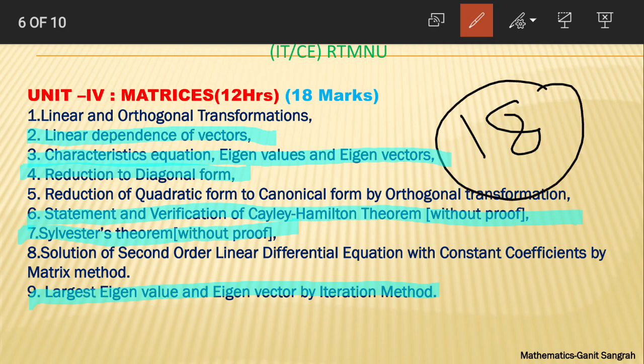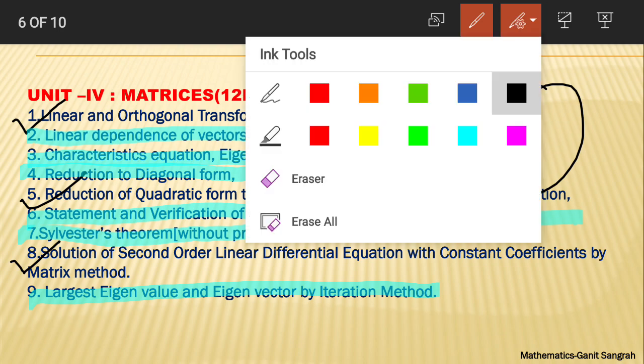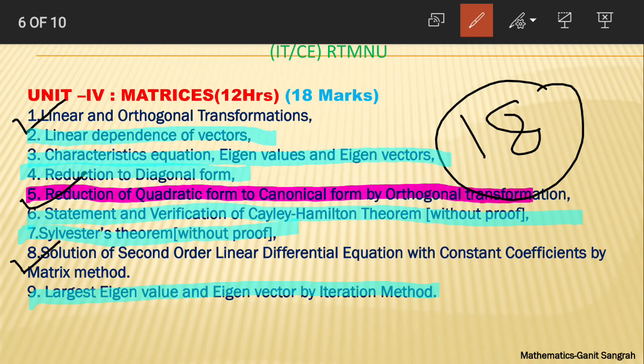The other topics are also easy — like linear and orthogonal transformation, reduction of quadratic form to canonical form. There's also solution of second-order linear differential equations with constant coefficients, which is the application part of matrices and generally goes in the or part. One thing I want to tell you: reduction of quadratic form to canonical form by orthogonal transformation — the questions on this topic take 25 to 30 minutes to solve because the calculations are very long. You can skip this. Do the other things, and your 18 marks are confirmed. The topics I've ticked in blue — definitely do those in matrices. Don't skip this chapter at all; very easy marks are available.